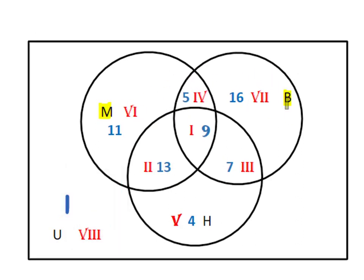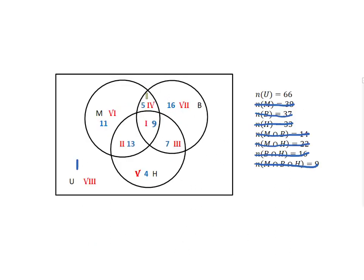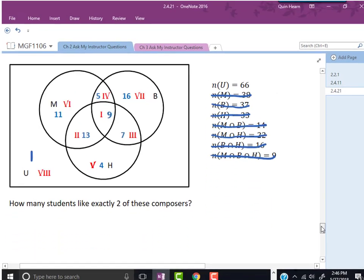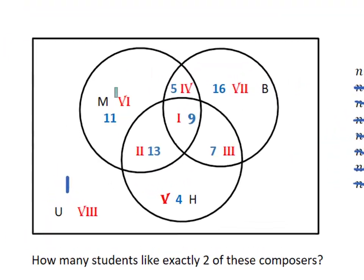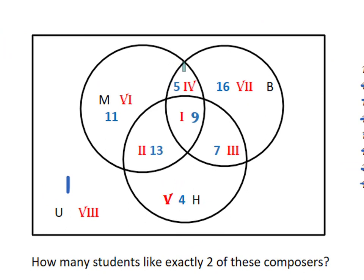Let's consider another question you might be asked about the survey results. How many students like exactly two of these composers? You might think the students that like Mozart and Beethoven would be here, and the students who like Mozart and Haydn would be here, and the students who like Haydn and Beethoven would be here. So you might think we have to add up 5, 9, 13, and 7.